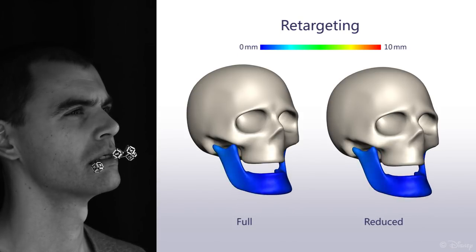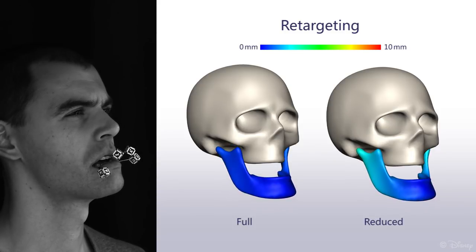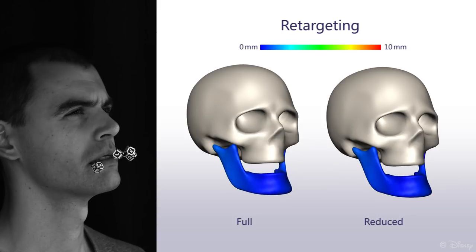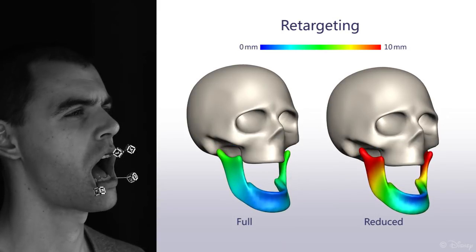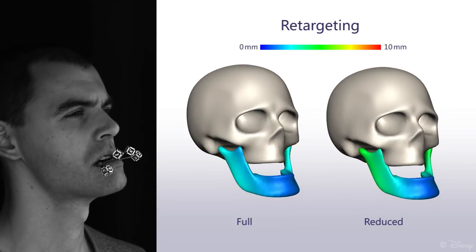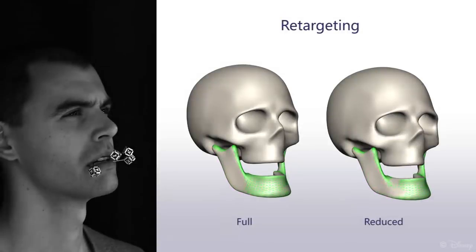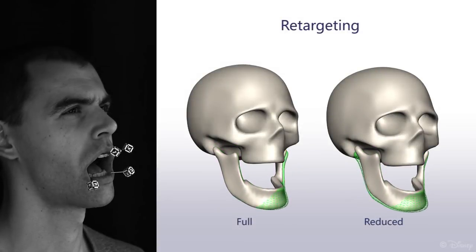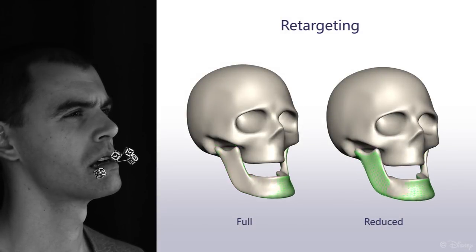Here we compare the error of the full and reduced adaptation methods versus ground truth data recorded using our acquisition setup. Naturally, the full adaptation is more accurate, especially around the extremal poses. Here we show the comparison again, this time overlaying the ground truth motion in green wireframe.